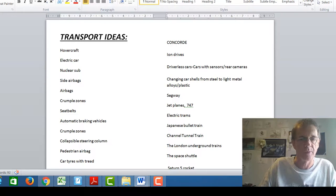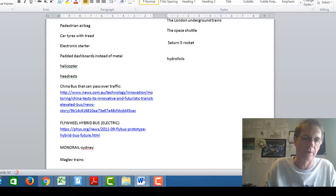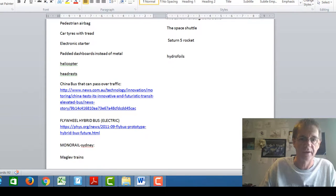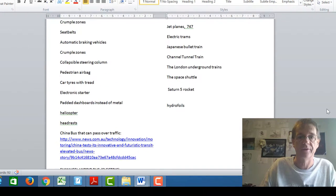So some of them might be changes to a type of transport to make it safer, for example, what might be whole forms of transport that were new or new types of trains and so on. So if you can look at that list there, that might give you some ideas there, flywheel and a hybrid bus that was electric, monorail in Sydney that was there, maglev trains, hydrofoils and so on.